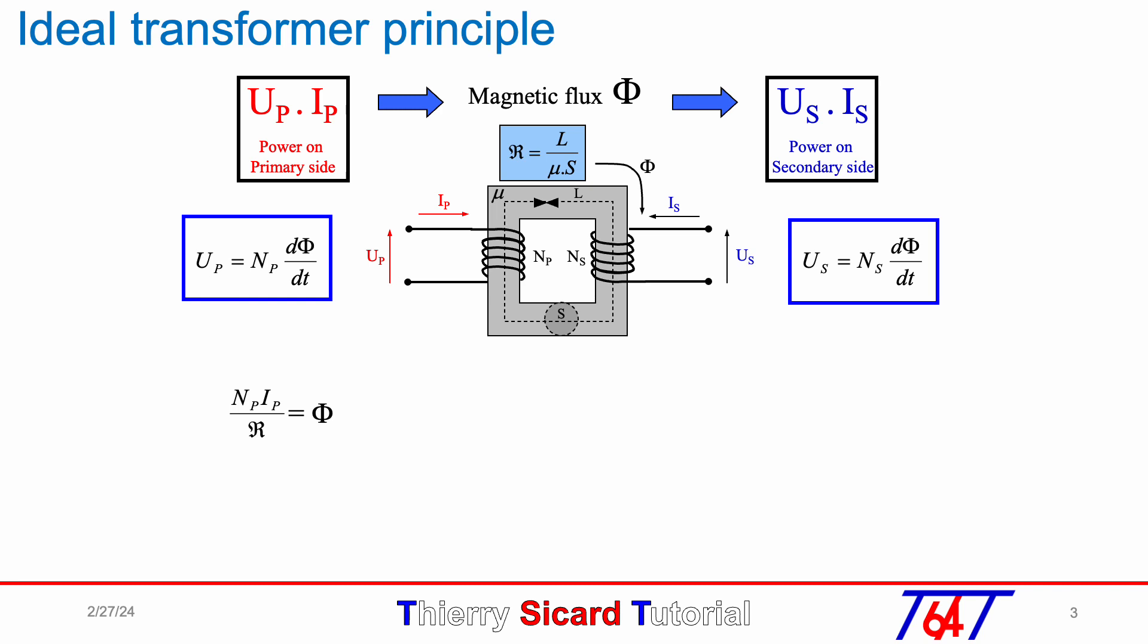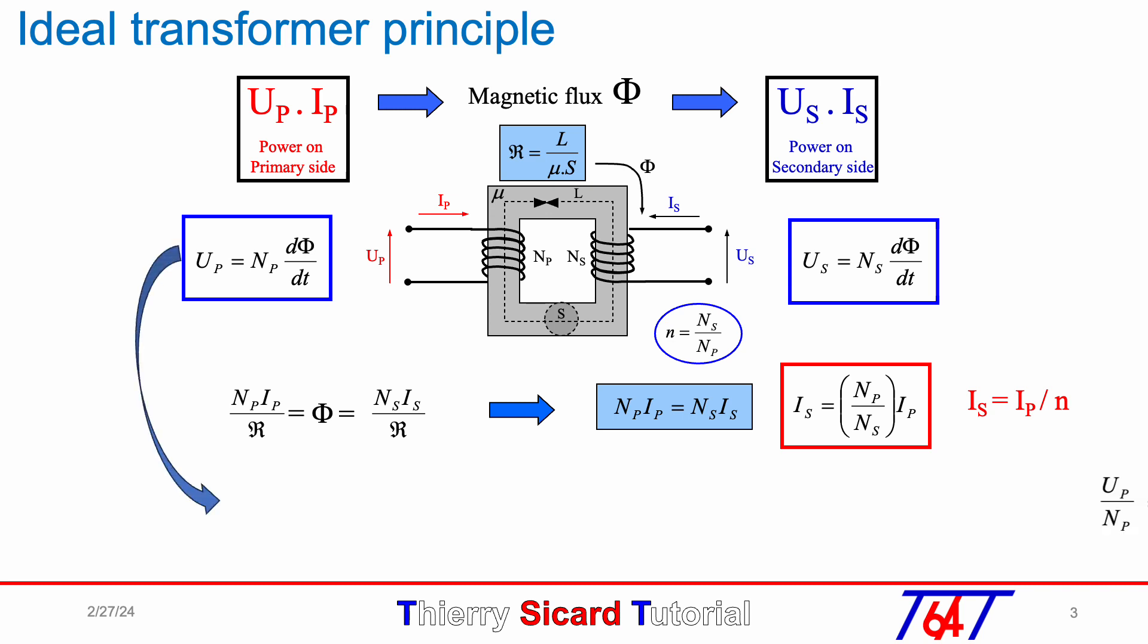But as the magnetic flux is common with both coils, Φ is also equal to N_S times I_S over reluctance. From this relation, we get N_P I_P equals N_S I_S, which gives the current relation I_S equals I_P over n, if we set n as N_S over N_P. The flux variation versus time dΦ/dt on the primary coil is equal to U_P over N_P.